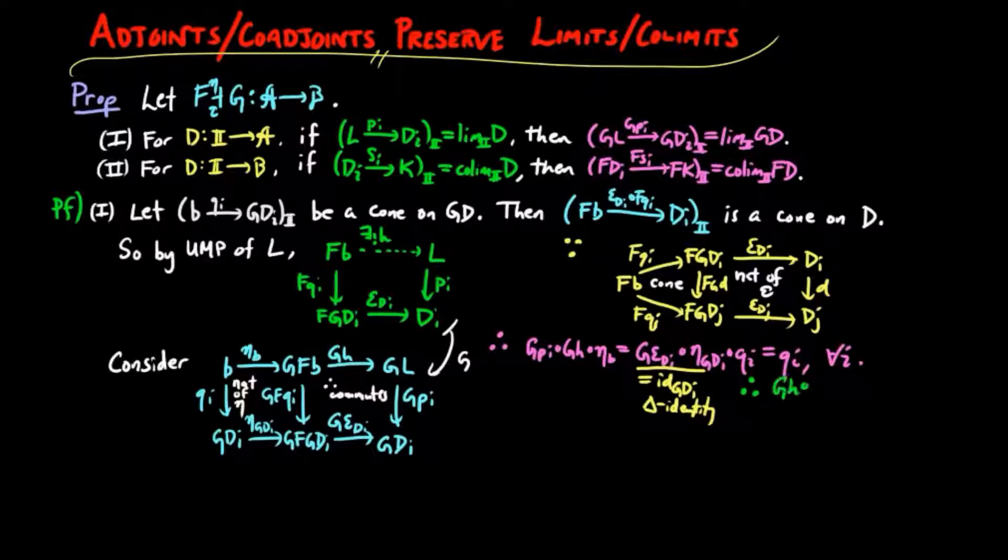Therefore Gh∘ηB is a factorization of the cone on B through the cone on GL. We have left to prove uniqueness to show that GL is the limit.